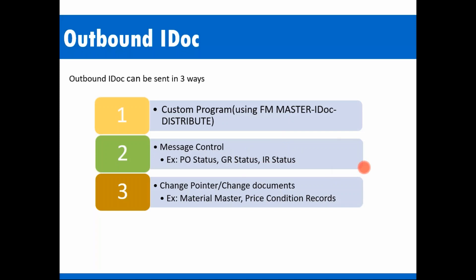The knowledge you gain from the PO status example can be applied to other message types as well. Message control is the most commonly used method because PO status, GR, and other transactional documents are sent using output types. The third method is change pointers.